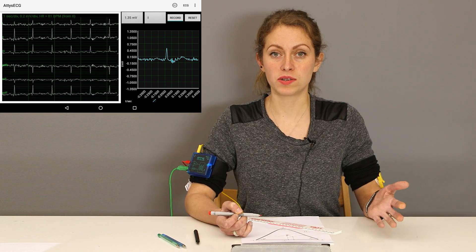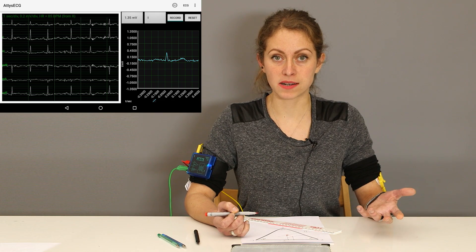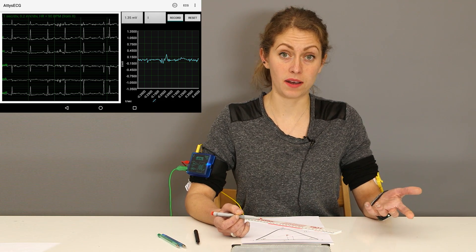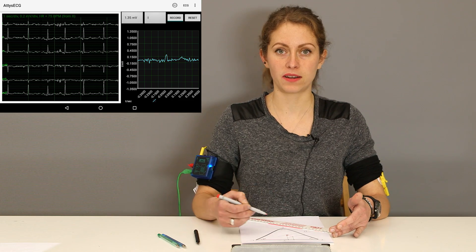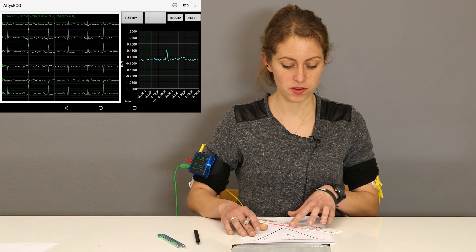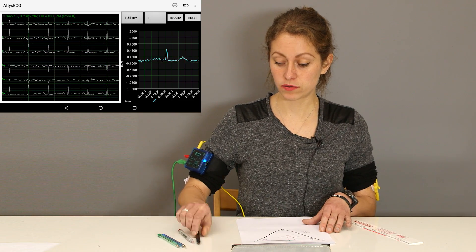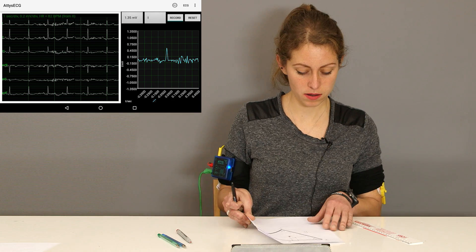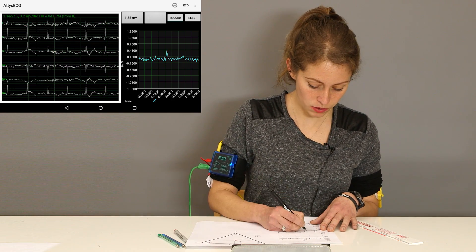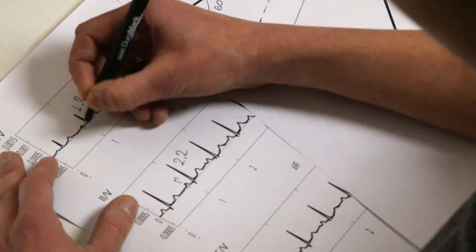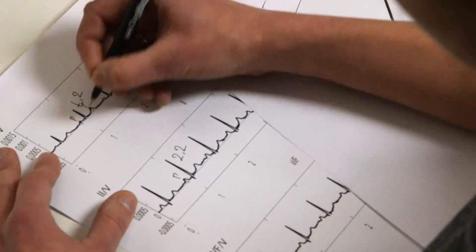But imagine now that you want to calculate the vector at all moments in time, and not just for the R peak like we've done here, but for all the peaks. So for example, for P, which is this one here, and T.